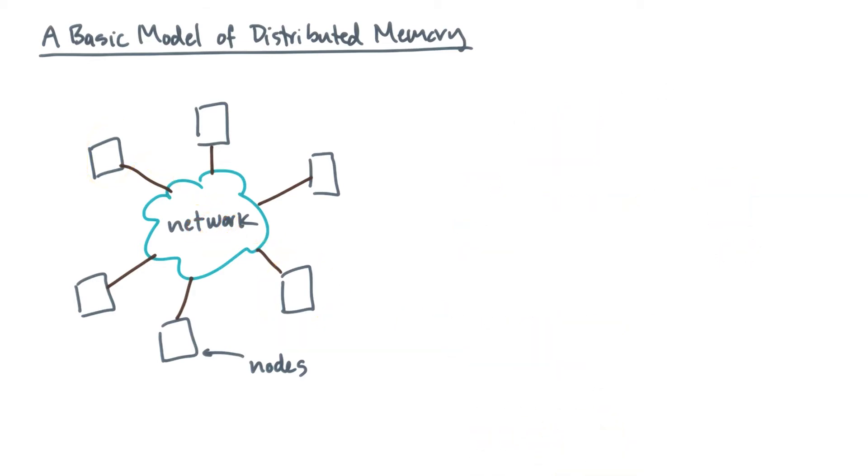Now this machine model has a few simple rules. The zeroth rule of the model is you never talk about the model. By that, I mean you need to master and internalize these rules. Okay, so what are the real rules? The first rule is that you should assume the network is fully connected. That means there's always a path from any node to any other node in the network.